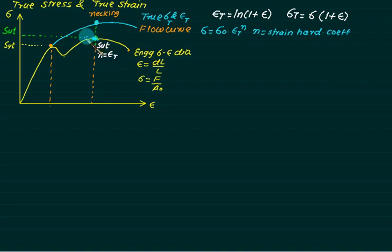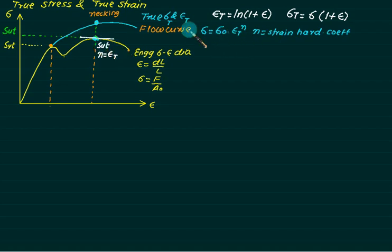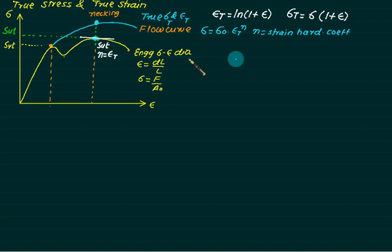If you draw a tangent to the flow curve at its maximum, it is a maxima. You can differentiate the flow curve equation with respect to sigma and solve. You will get that for SUT only, n equals true strain epsilon-t. So n will be the same as true strain at SUT.